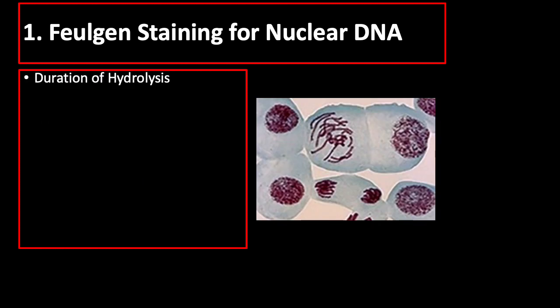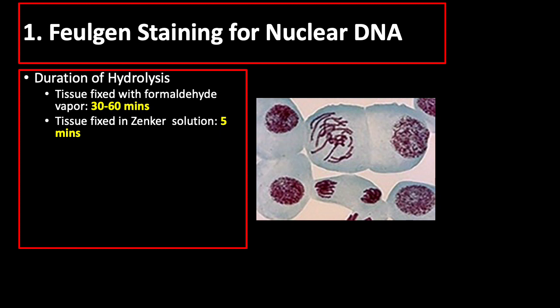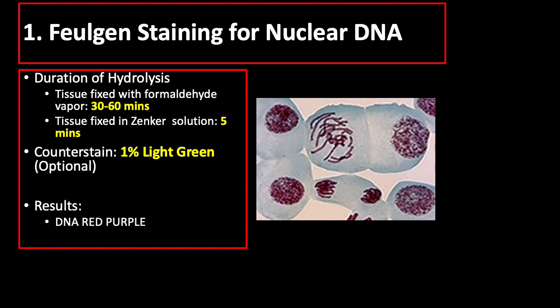Regarding how long hydrolysis should be: for tissue fixed with formaldehyde vapor, the duration of hydrolysis is 30 to 60 minutes. For tissue fixed in Zenker solution, the duration is 5 minutes. A counter stain such as 1% light green may also be employed, but this is optional. For Feulgen staining, DNA stains red-purple while the cytoplasm stains green.